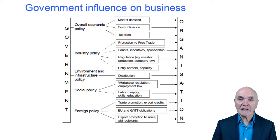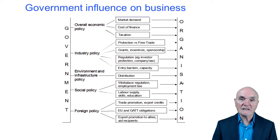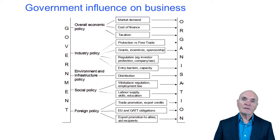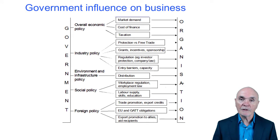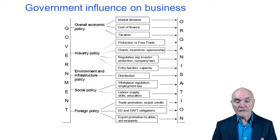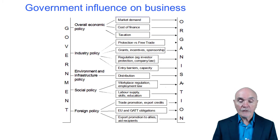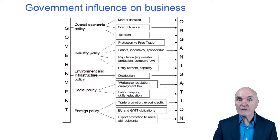Taxation — of course, governments need taxation to help them with government spending. You could well argue that if taxation was around 95%, why would anyone bother working? It's certainly going to be a disincentive to working much overtime. If taxation was way down at 5%, there's lots of incentive to work — you keep nearly all of it. But of course it may not raise enough cash for government purposes. A low taxation rate in a country can encourage foreign companies to come in and set up there to benefit from a low taxation regime.